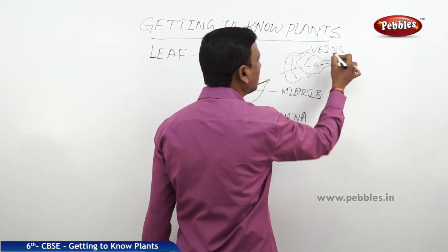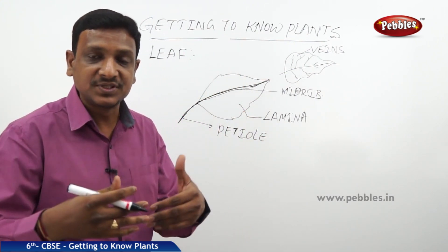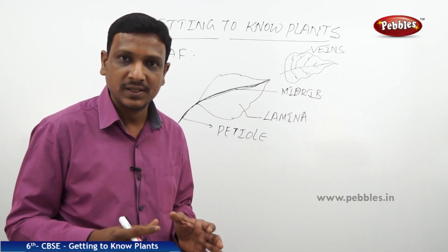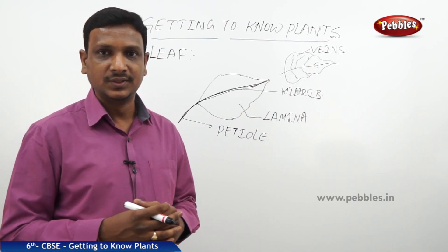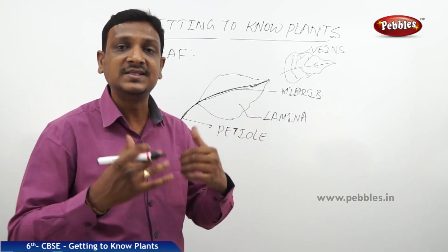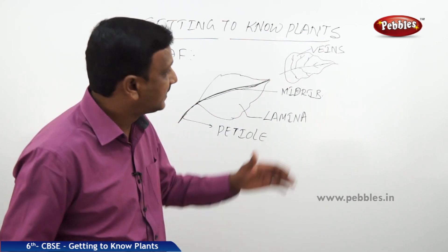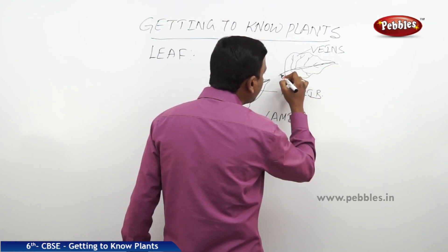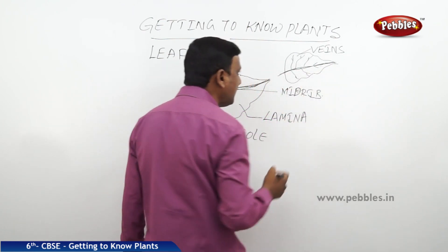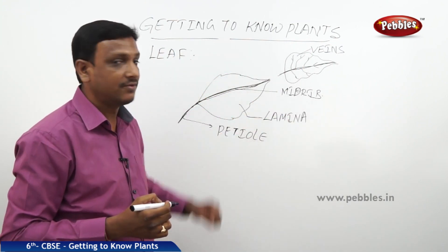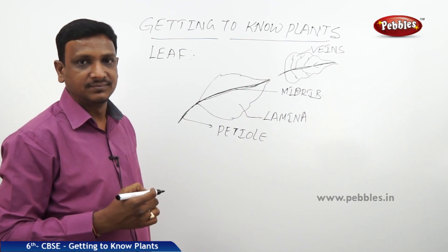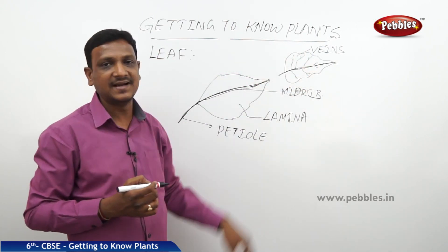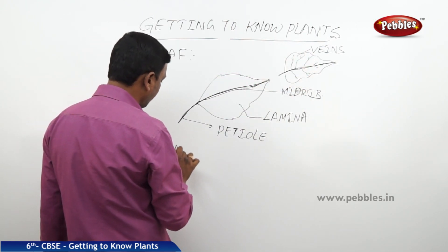Veins are a network of pipes which are connected to the vessels of the stem. Their function is the conduction of water — they help in the supply of water and minerals to the leaf. We find a main or major vein which extends from the petiole to the tip of the leaf, and that is called the midrib. The pattern of veins inside the leaf is called leaf venation.